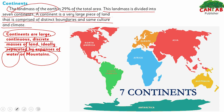Either between one continent and another there is a huge mass of water, or huge masses of mountains. So basically we have seven major continents. Starting from Australia — number one is Australia, number two is Asia, number three is Europe, number four is Africa, number five is South America, number six is North America, and number seven is Antarctica. These are the seven major continents of the Earth.